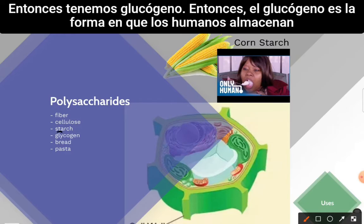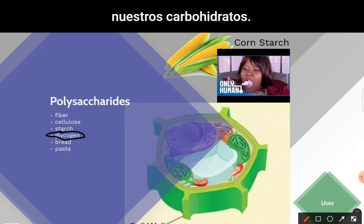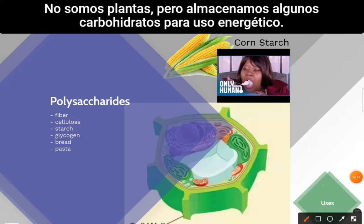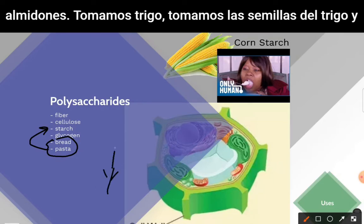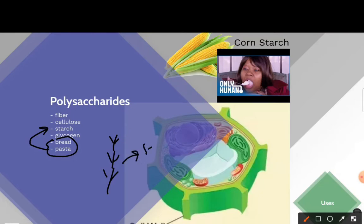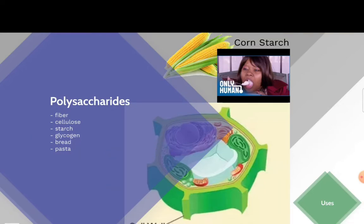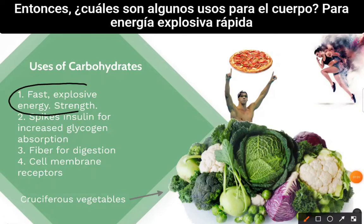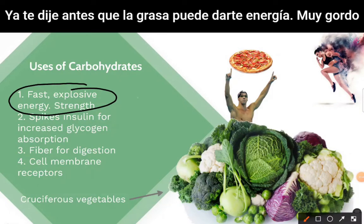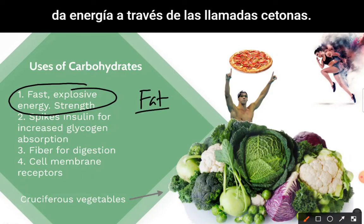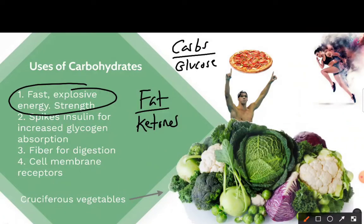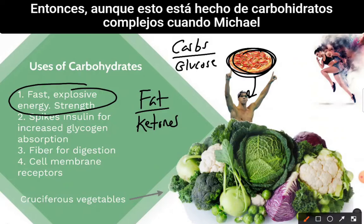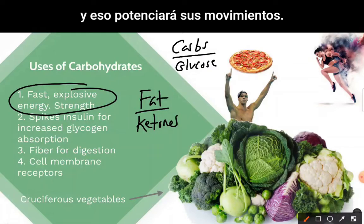Glycogen is how humans store carbohydrates — we are not plants, but we do store some carbs for energy use. Bread and pasta are good examples of isolated starches made from ground wheat seeds. For fast, explosive energy you want carbs. Fat gives energy through ketones, while carbs give energy through glucose. So even though pizza is made of complex carbs, when Michael Phelps eats it, it gets converted to glucose in the body to power his movements.